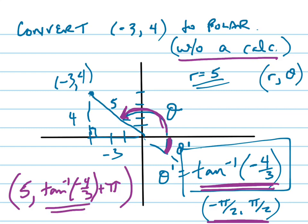If they say find this without using a calculator, if you only put this, you're technically wrong. Because that point isn't (-3, 4). That point would be positive 3, negative 4.